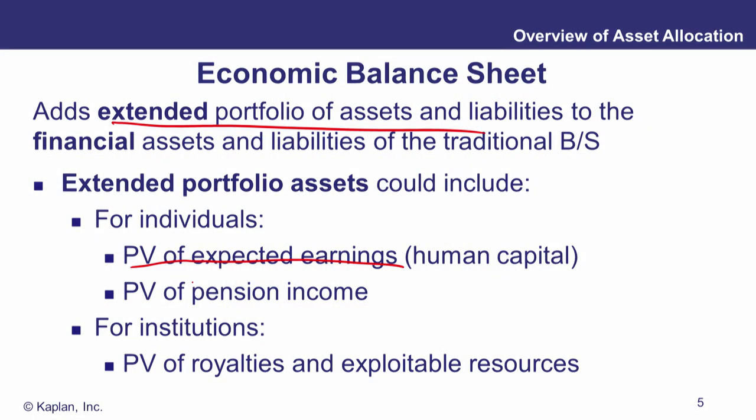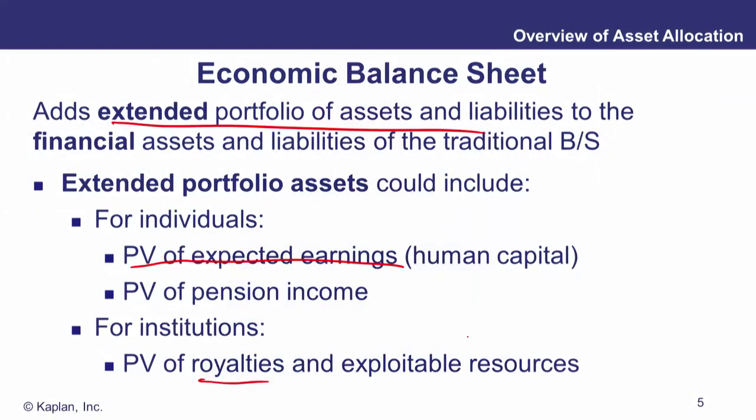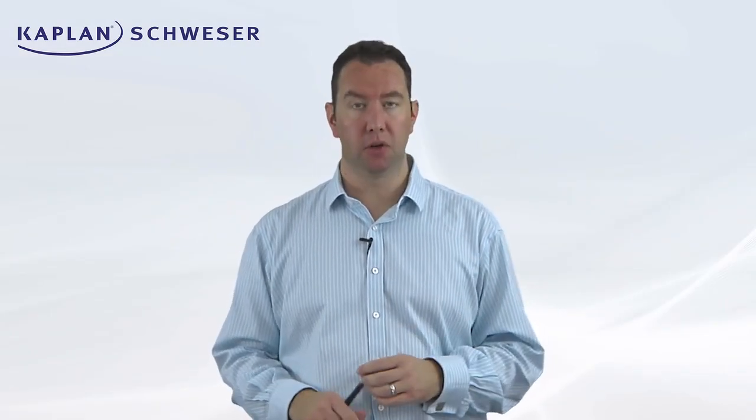Pension income in retirement is another extended asset that would appear on an extended balance sheet. For institutions, it's a little different. Things like royalties — if the company owns a copyright, trademark, or licence and they're expected to get some income from that, then the present value of that future income stream would be an extended asset. Likewise, natural resources: the present value of future income gleaned from those resources. There's a common theme here — it's the present value of future income streams, which wouldn't appear in a traditional balance sheet but is important for the investment manager.